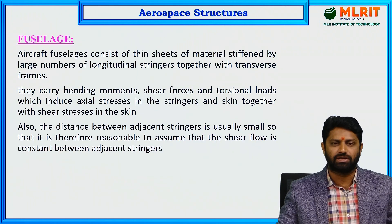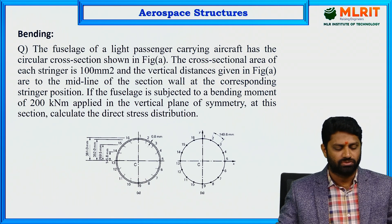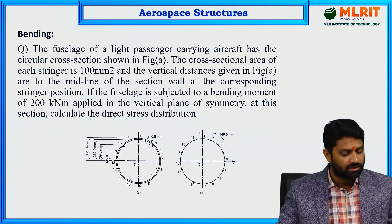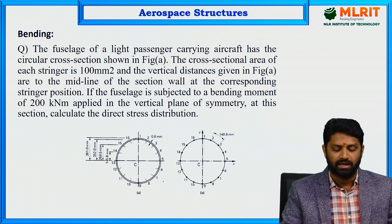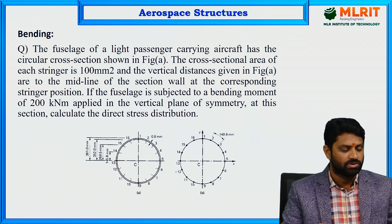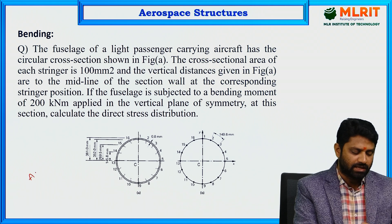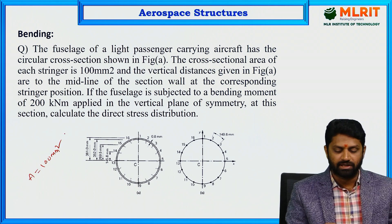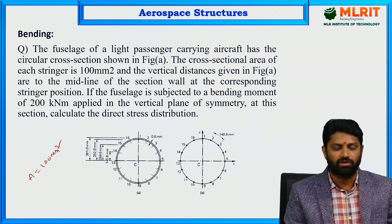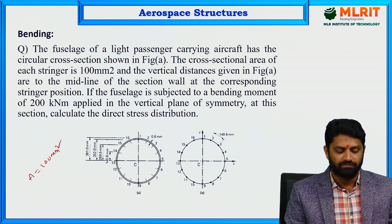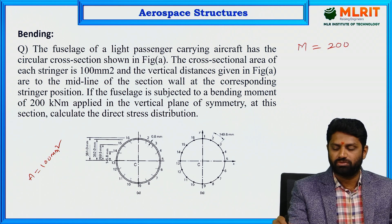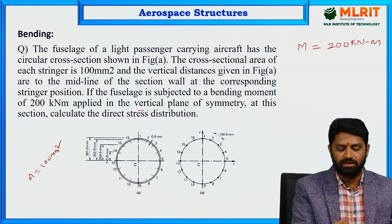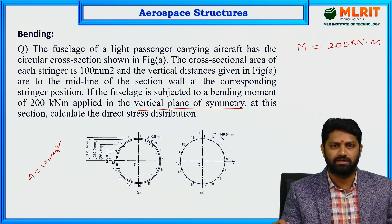Let us consider the bending effect of the fuselage by directly solving a problem. The fuselage of a light passenger-carrying aircraft has a circular cross section shown in figure A, and the cross-sectional area of each stringer is 100 mm². The vertical distances given in figure A are to the midline of the section wall at the corresponding stringer position. The fuselage is subjected to a bending moment of 200 kilo-Newton meters applied in a vertical plane of symmetry, and we are asked to calculate the direct stress distribution.